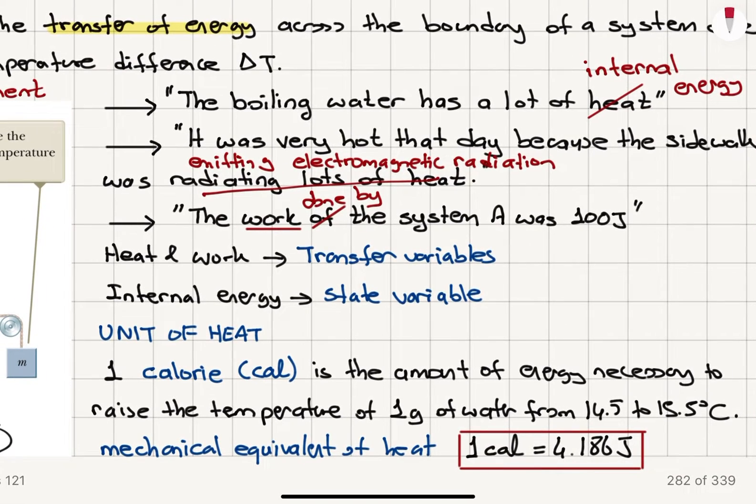Now, what is the unit of heat? The unit of heat is calorie with the lowercase c here. Here, 1 cal is the amount of energy necessary to raise the temperature of 1 gram of water from 14.5 to 15.5 degree C.